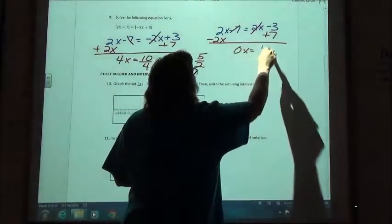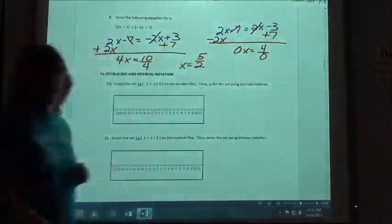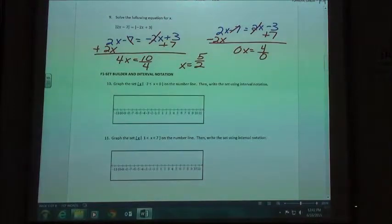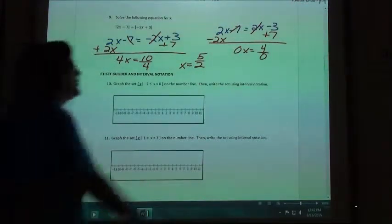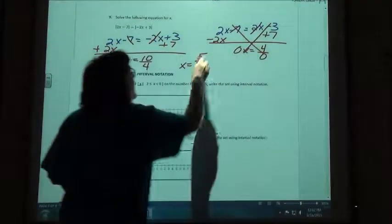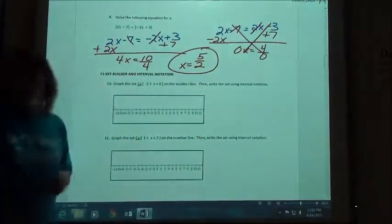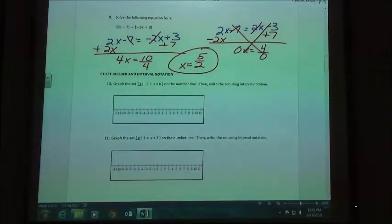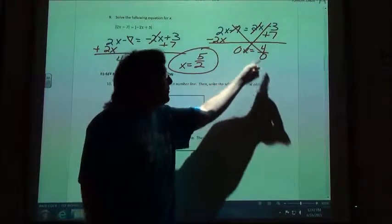0x equals 4. And what happens when you do 4 divided by 0? It's not 0. It's a math error. It's undefined. So in other words, this would give you a no solution. So in this case, instead of getting two answers, you're just going to have the one answer. You'll just enter in the 5 halves that we got on the first one. So that will happen on occasion where you have one where you get zero x's and get something that's undefined.